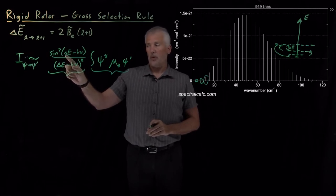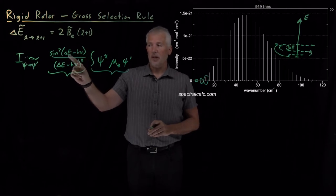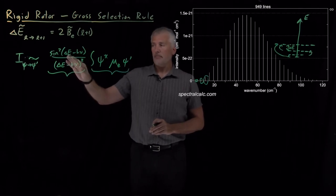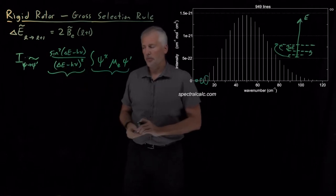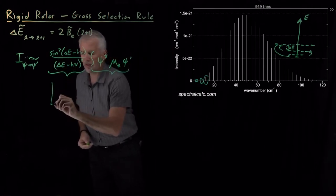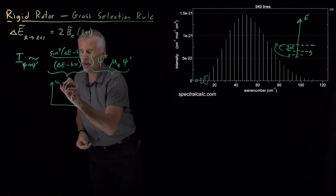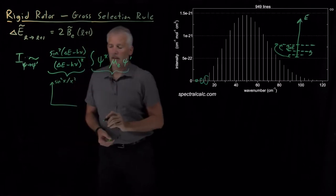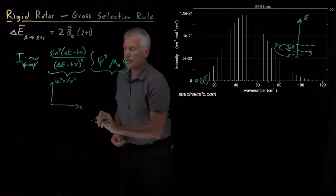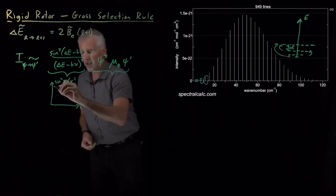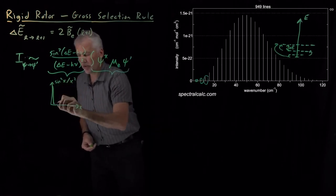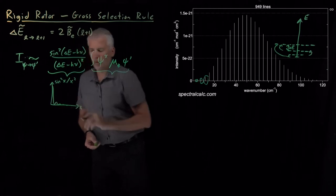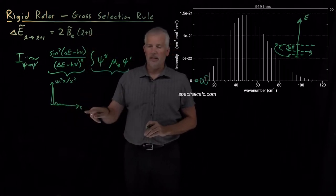So normally, we know that delta E is equal to h nu. If we feed the molecule some light that has h nu equal to that difference in energy, then it will absorb light because this term will be strong. If I make a graph of sine squared of something divided by that thing squared as a function of x, the graph of that quantity is large when x equals zero, and oscillates and quickly dies and becomes small as x gets larger.